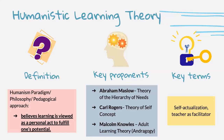Humanistic learning theory is defined as a humanism paradigm of perspective, looking into how humans learn. It is a belief that learning is viewed as a personal act to fulfill one's potential. There are some humanistic learning theorists, among them Abraham Maslow, who proposed the theory of hierarchy of needs, and also Carl Rogers, with the theory of self-concept.